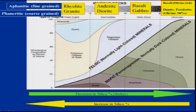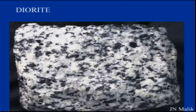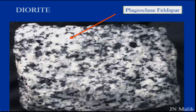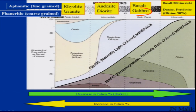Looking at diorite, one of the phaneritic coarse-grained rocks — diorite is an intermediate rock. The whiter part is mainly plagioclase feldspar, and the darker parts are amphiboles. It is comparatively lighter. Then we have gabbro, which is as we move towards more mafic rocks.